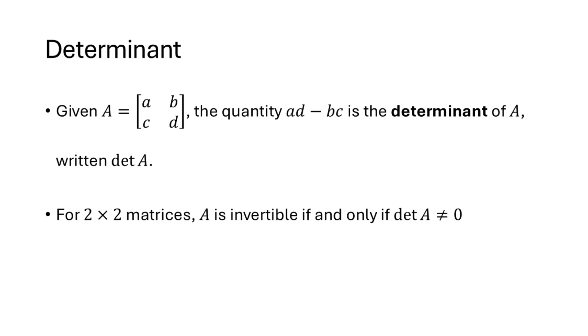Now in the case of a 2 by 2 matrix, this quantity, this number AD minus BC, we call that the determinant of A. And for 2 by 2 matrices, the matrix A is invertible if and only if that determinant is not equal to 0. We're going to talk about determinants more in lecture 26, so look for that lecture if you're interested in learning more about determinants.